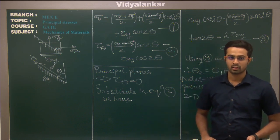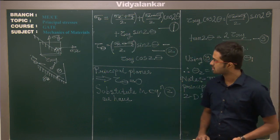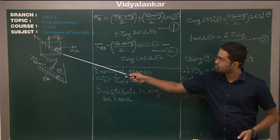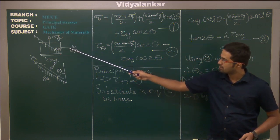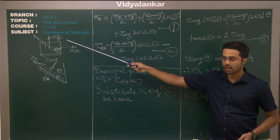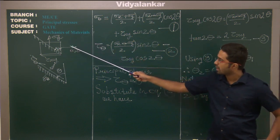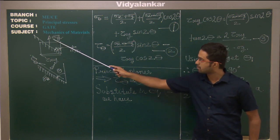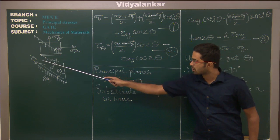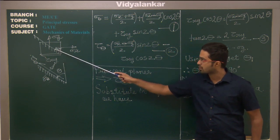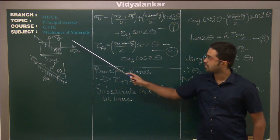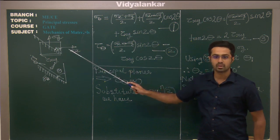Hello friends, we will continue with the principal stresses. Now in the diagram you can see here, I have a planar 2D figure on which we have sigma x acting and I have sigma y acting. So I have sigma x, sigma y, and there is some external shear stress acting as well, tau xy. So I have a y-axial system on which I have sigma x, sigma y and tau xy.